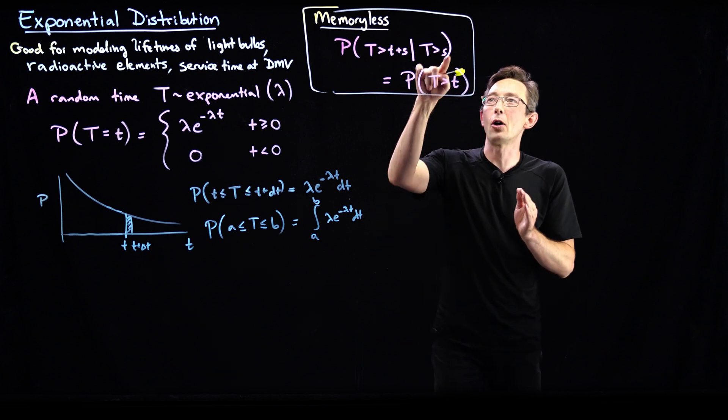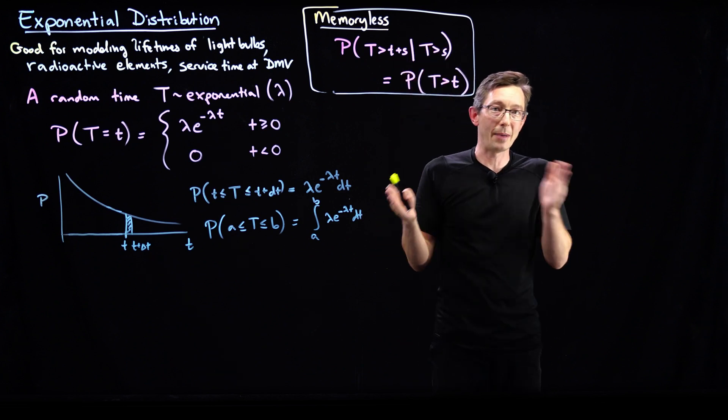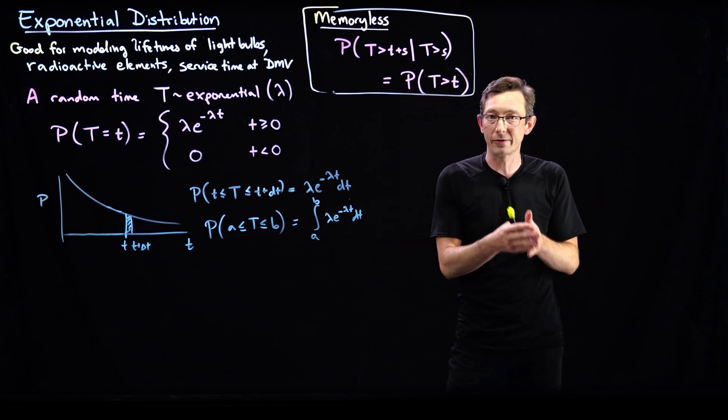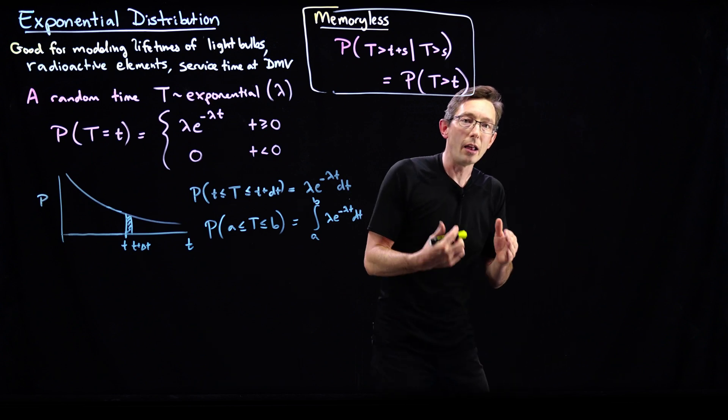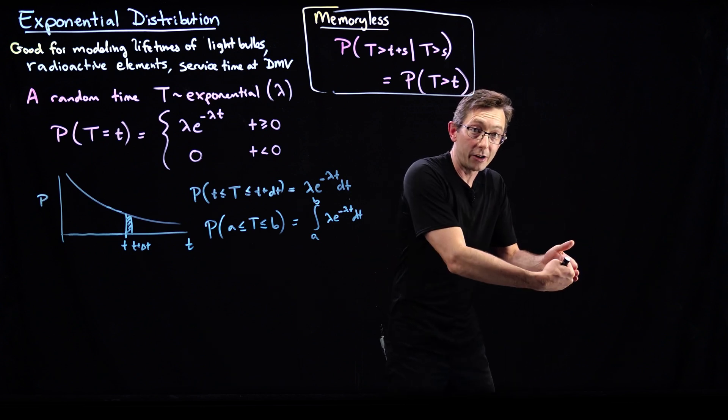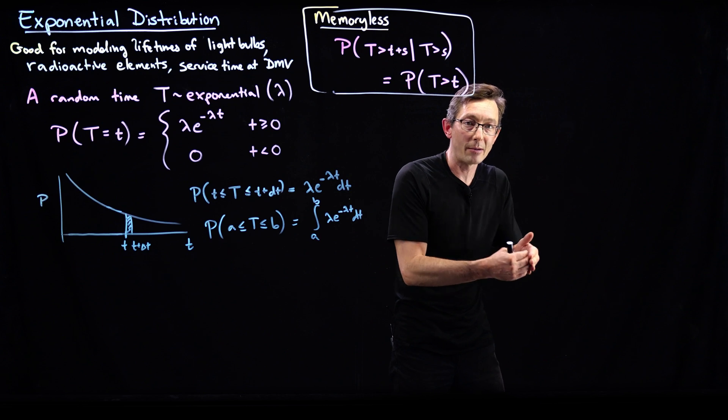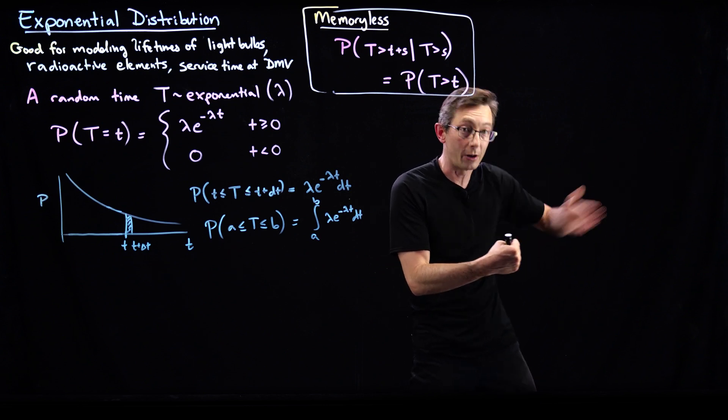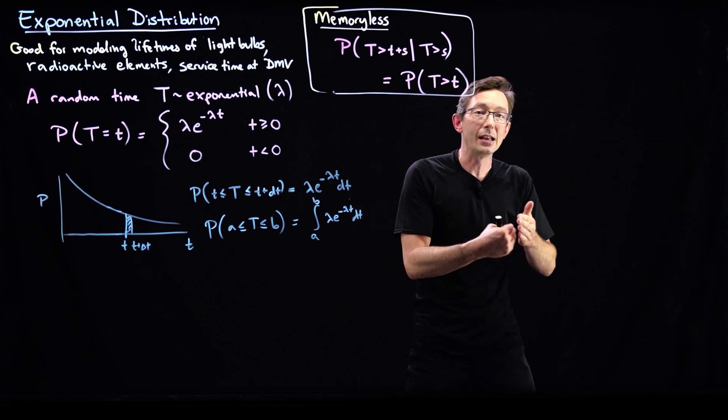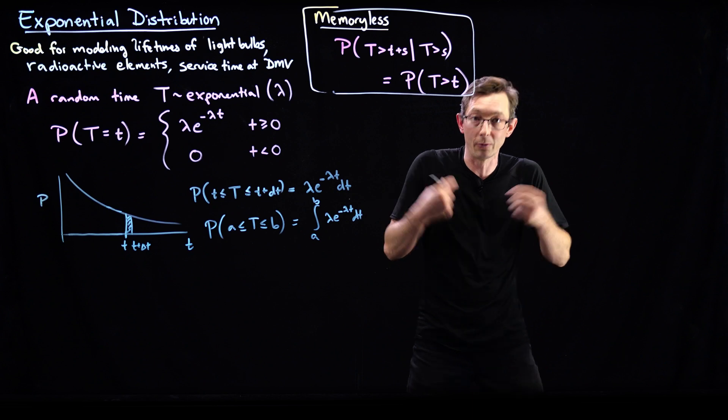And that means that if I've already elapsed for time s, if my light bulb has already lasted for a hundred hours, then after that hundred hours, the clock resets and my probability of it failing in the future is as if time was zero from right now.